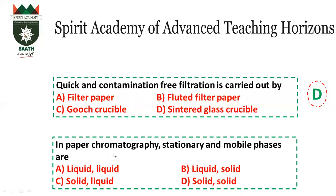Next question: In paper chromatography, what are the stationary and mobile phases? Paper chromatography means the stationary phase is water — water is the liquid stationary phase. The mobile phase is an organic liquid. So both phases are liquid.